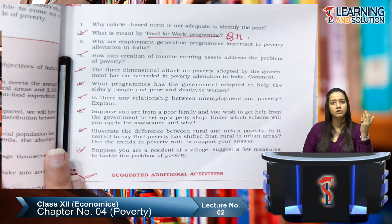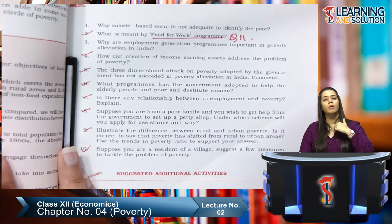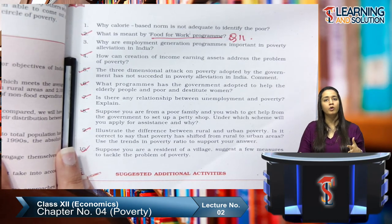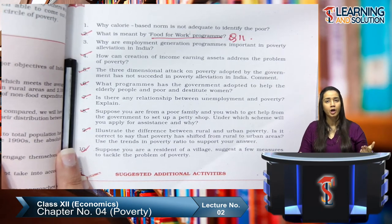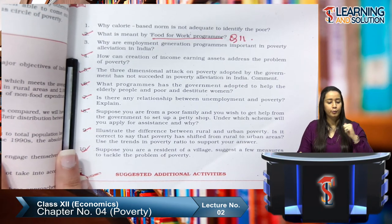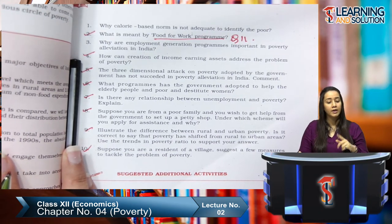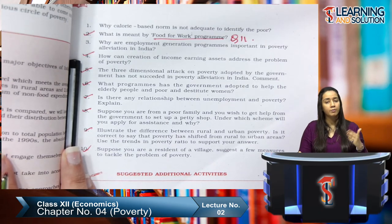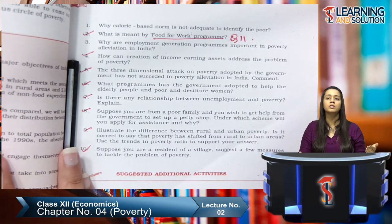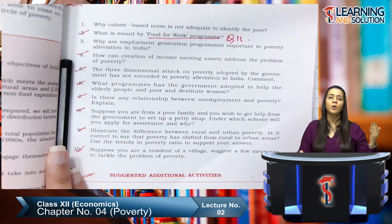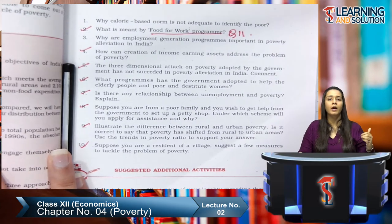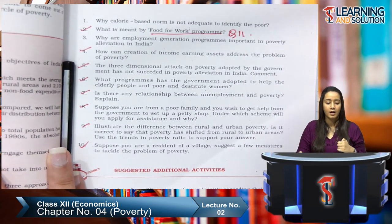Basically, income is generated from the four factors of production: land, labour, capital, and entrepreneur. If these high income-generating assets — land, labour, and capital — are distributed to poor people, they will increase their level of income and rise above the poverty line. That is how the creation of income-earning assets addresses the problem of poverty.